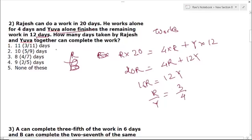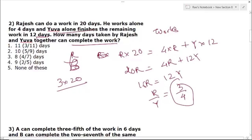How many days can Rajas and Yuba together complete the work? Efficiency of R is 3 and Y is 4. Total work = 3 × 20 = 60. Together their efficiency = 3 + 4 = 7. So 60 ÷ 7 = 8 and 4/7 days. The answer is option 3.